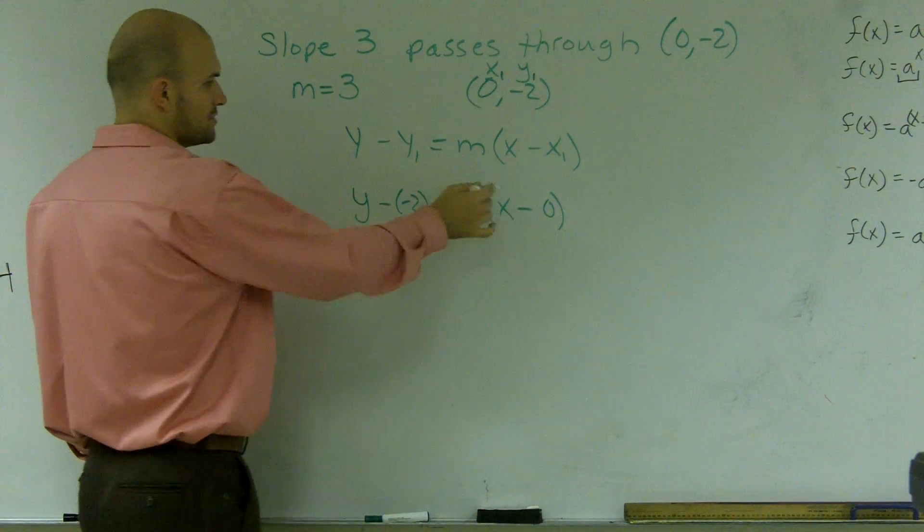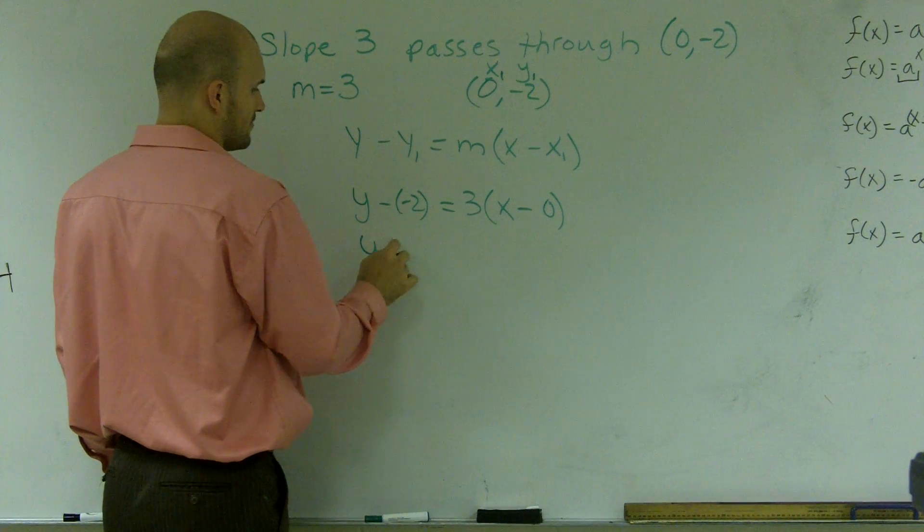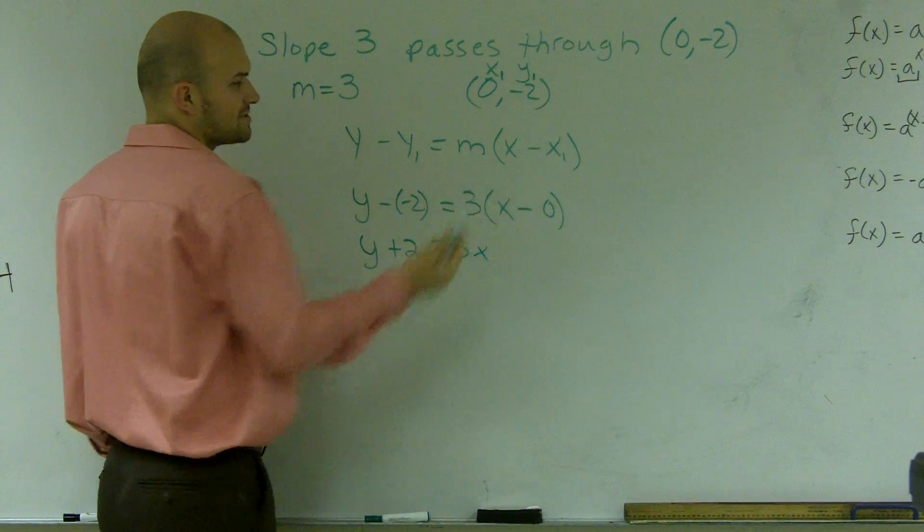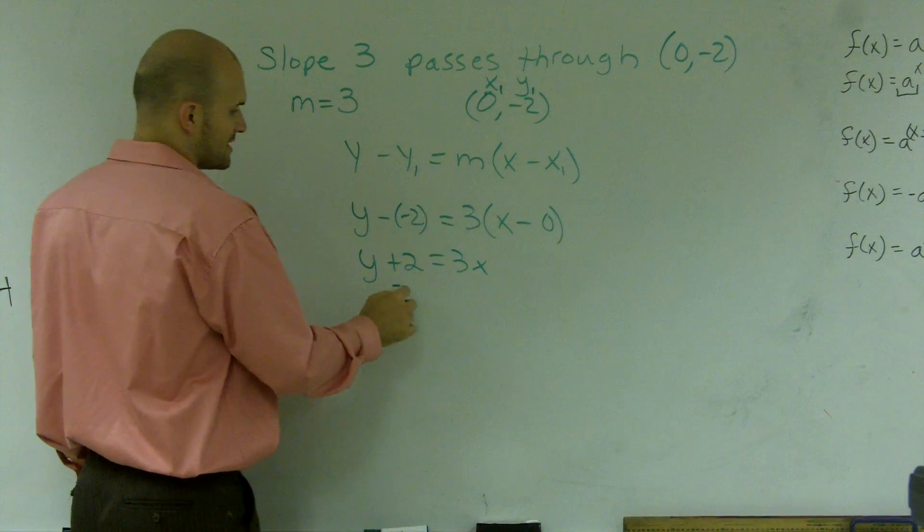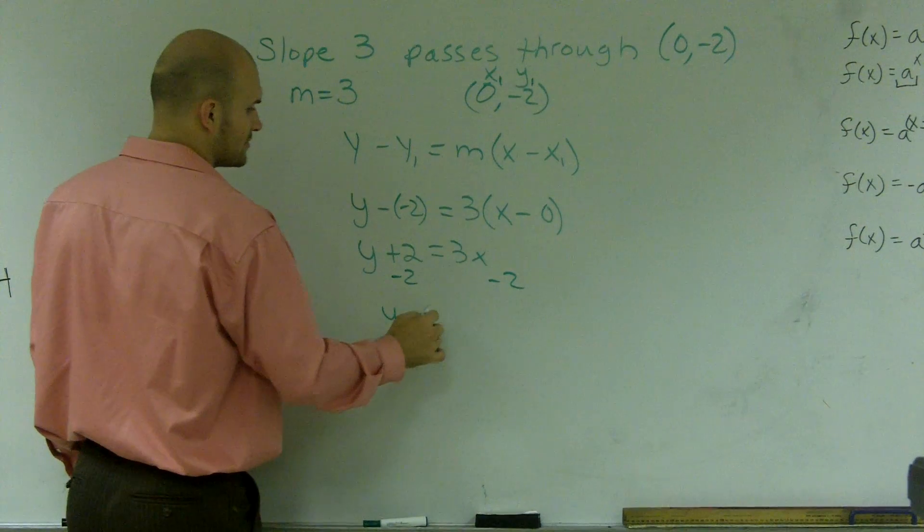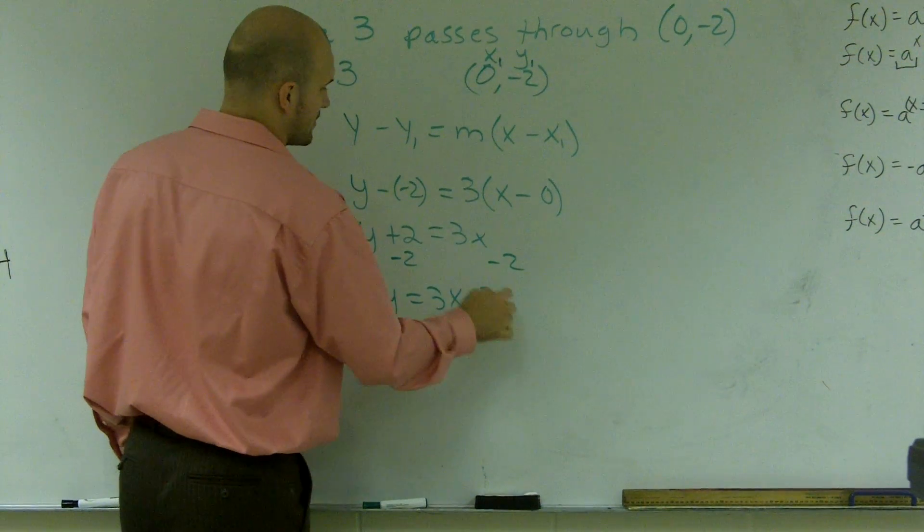And then what we'll have is we'll use the distributive property. So y plus 2 equals 3x, and then 3 times 0 obviously is going to be 0. I subtract my 2 over, and therefore I get y equals 3x minus 2.